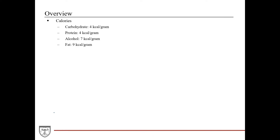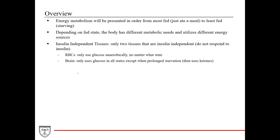This slide details the energy density of each of the major metabolites. The big thing to take away is that although carbohydrate is the primary metabolite for the human body, it actually has the least amount of energy density. Fat, which is obviously a major energy store, actually has the highest energy density. Those are the two key takeaways from that.